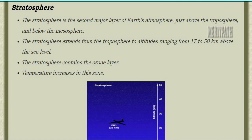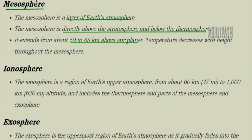Next is the mesosphere. Mesosphere is a layer above the earth's atmosphere, directly above the stratosphere and below the thermosphere. The height of the mesosphere is 50 to 85 kilometers above the land surface of the earth. As altitude increases, temperature decreases, so in the mesosphere the temperature is always colder.